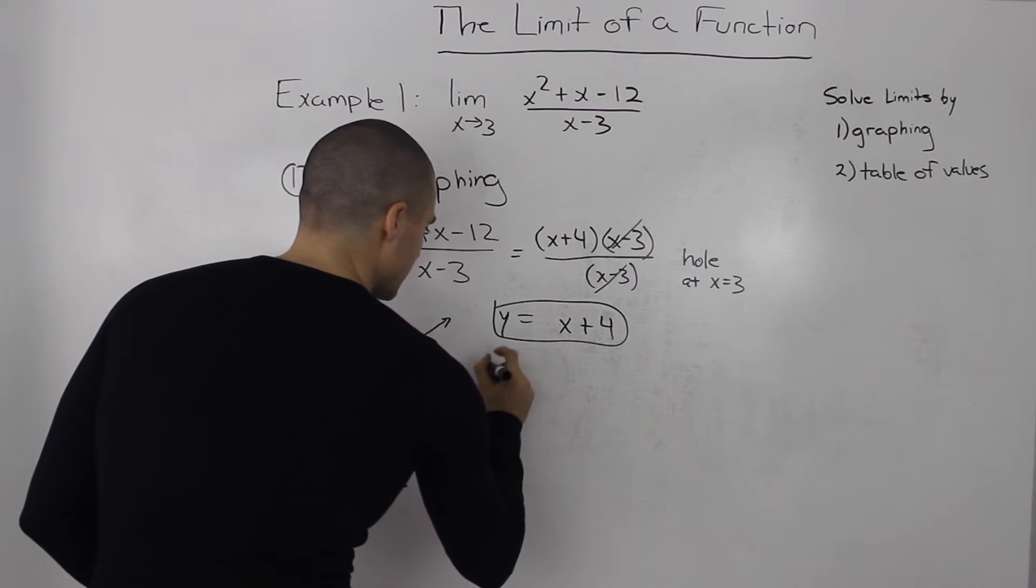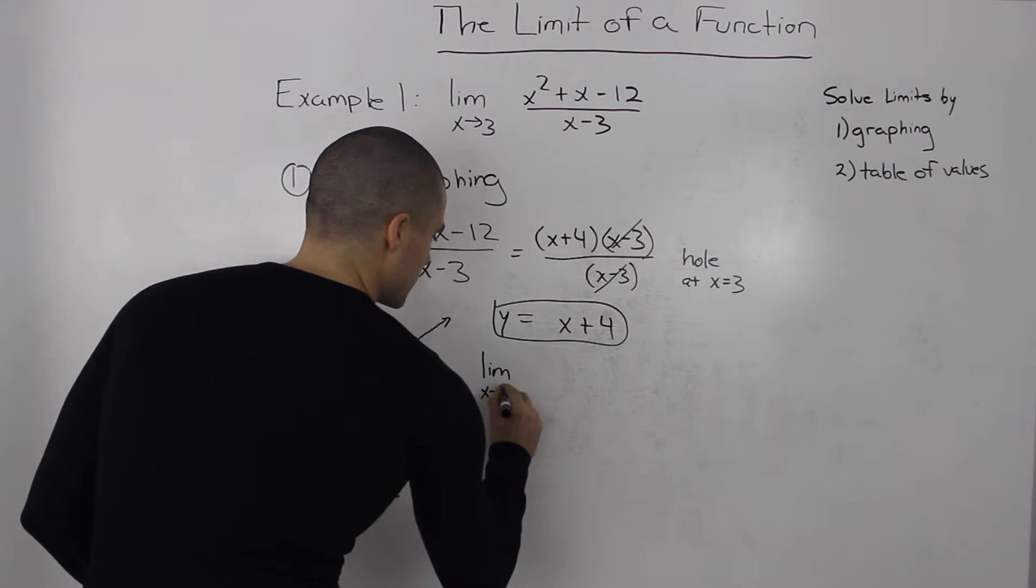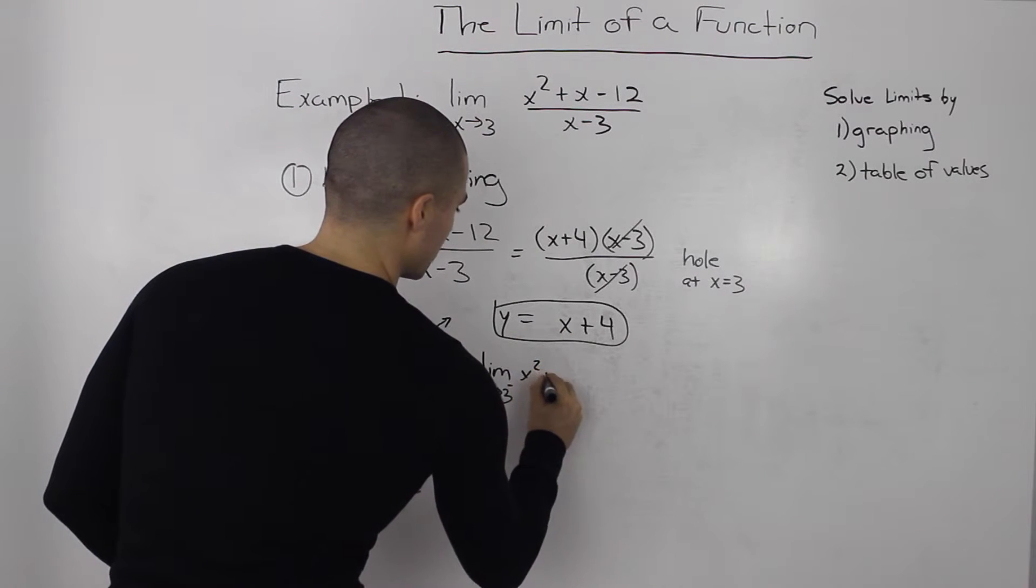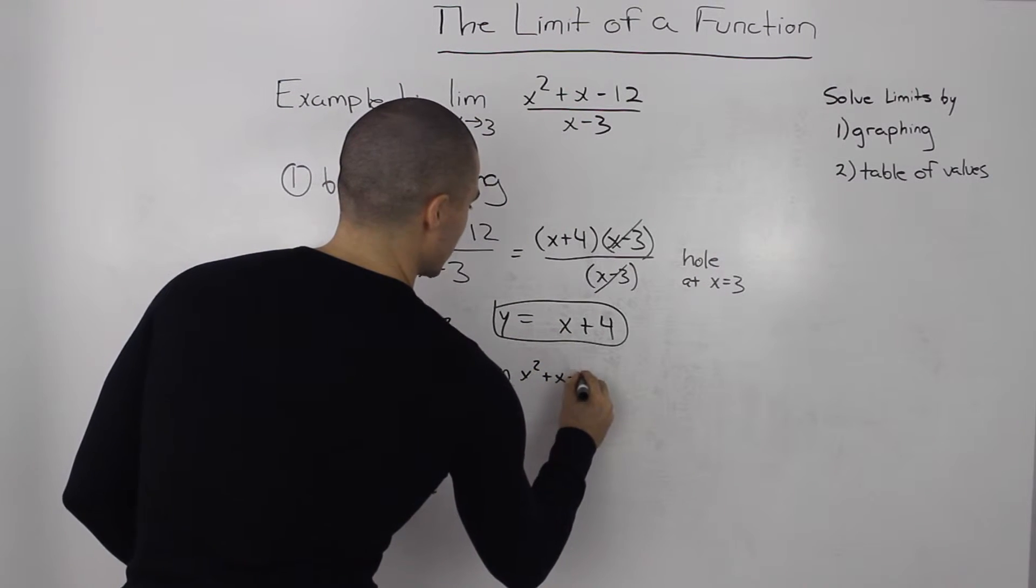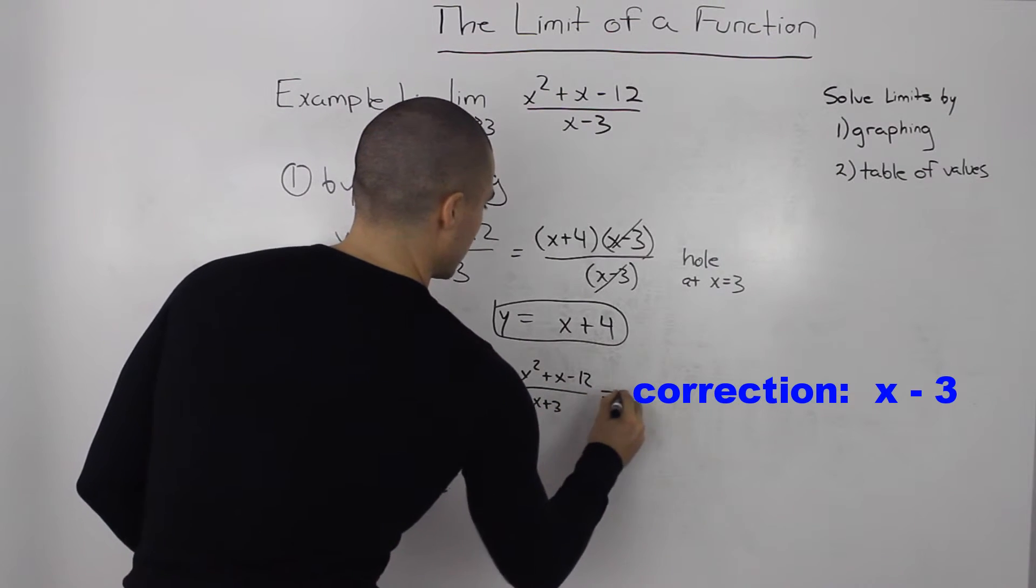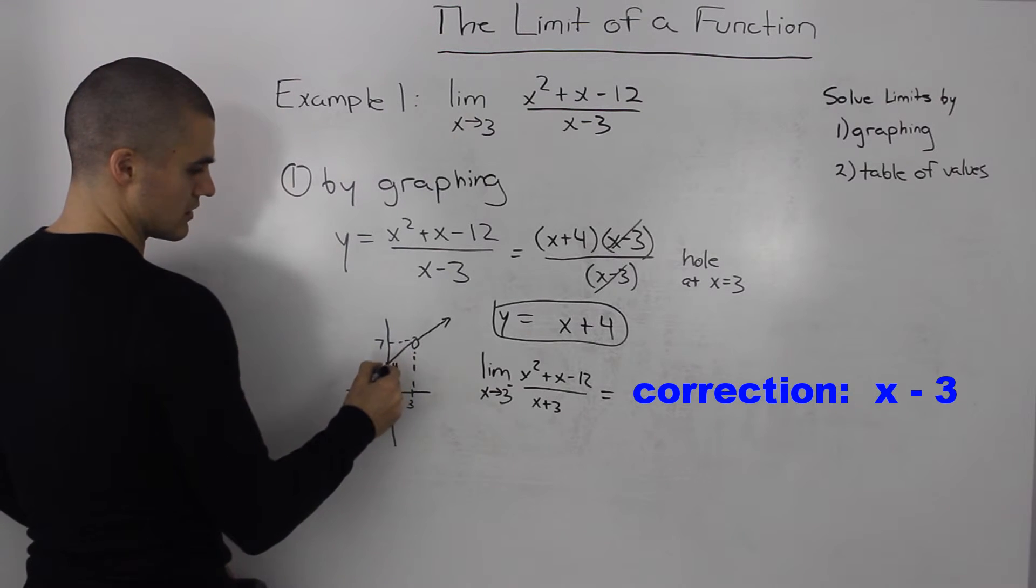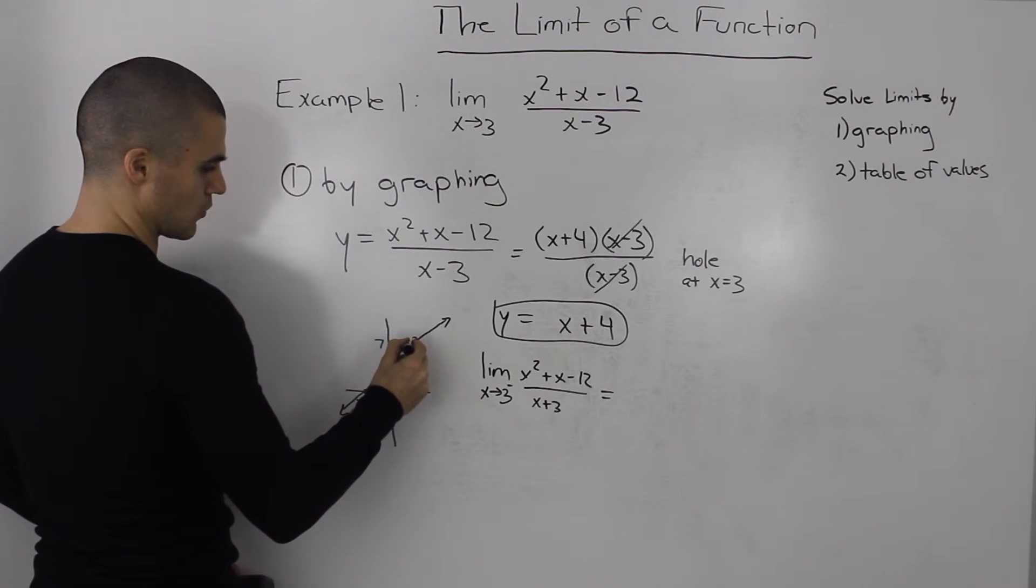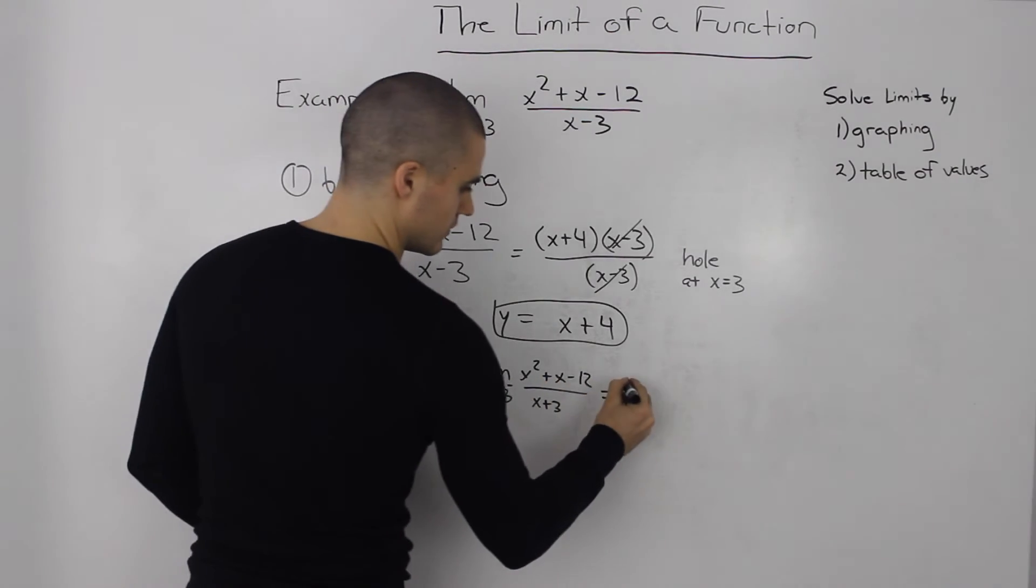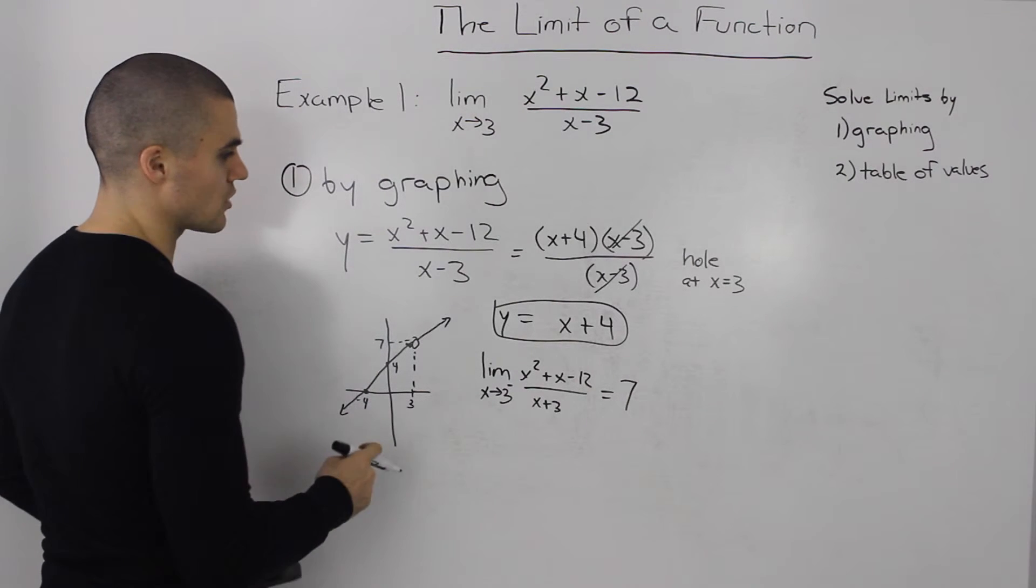Let's find the limit as x approaches three from the negative side of this function x squared plus x minus twelve over x minus three. What does it equal? As we're approaching three from the left side, what's the y-value approaching? It's approaching seven. It doesn't equal seven, but it's approaching seven, and that's all that matters.